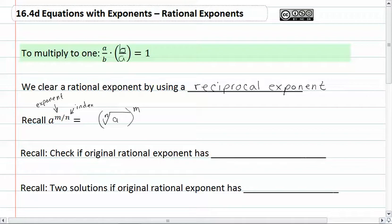Now recall that you'll need to check if the original rational exponent has an even root. We're looking at the denominator for that one. Even root meaning that you have a square root or fourth root or whatever. And in this type of situation, you get an extraneous solution.